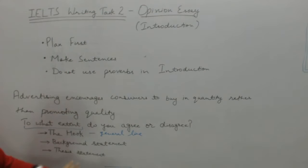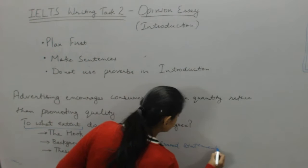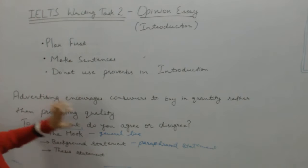The general line is the general view of the question. As the question is about advertising, the general line should be about advertising. The next is the background statement, which is the paraphrased statement. The paraphrased statement is about the question — that is, to paraphrase the whole question in your own language.